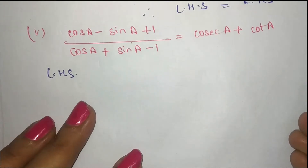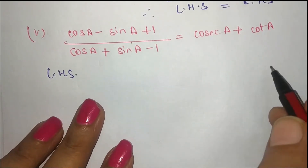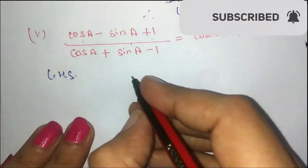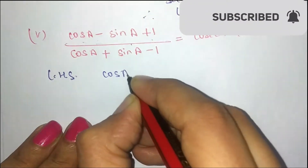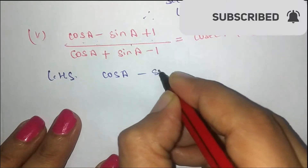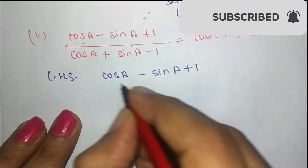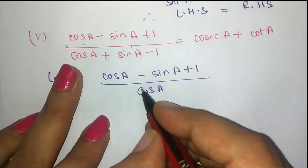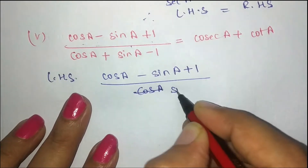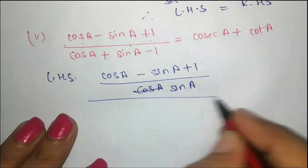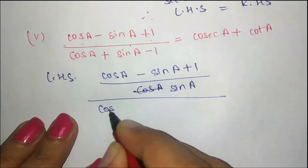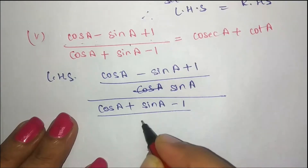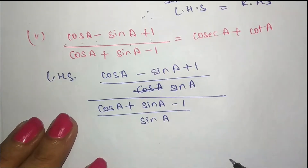So the left hand side is cos a minus sin a plus 1, and the right hand side expression involves cos a minus sin a plus sin a minus 1 divided by sin a.